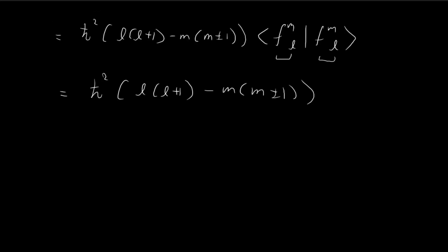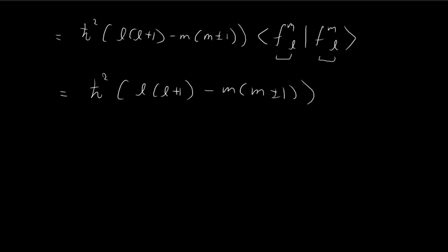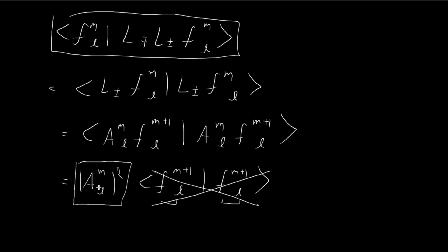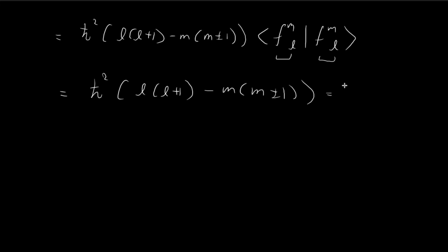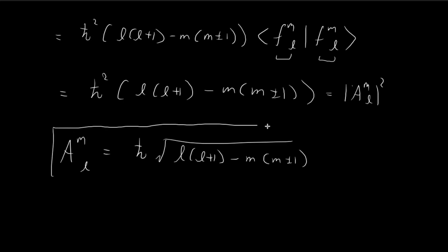Using two different methods, we obtained two expressions that are just different ways of evaluating the same inner product, so they must be equal. This means |A_ml|² = ℏ²[L(L+1) − M(M ± 1)], which implies A_ml = ℏ √[L(L+1) − M(M ± 1)]. And there you have it — that is how you solve this problem.